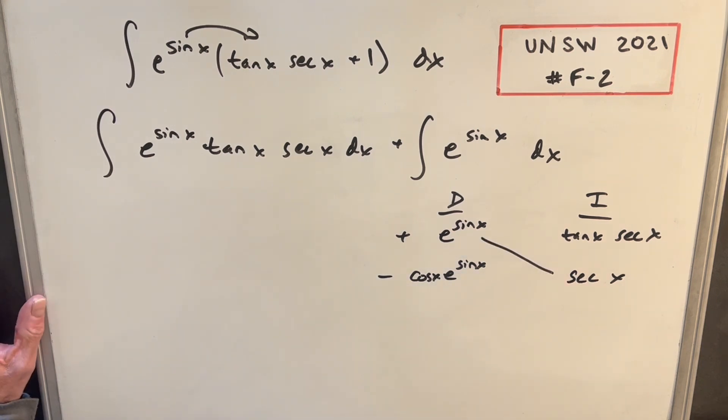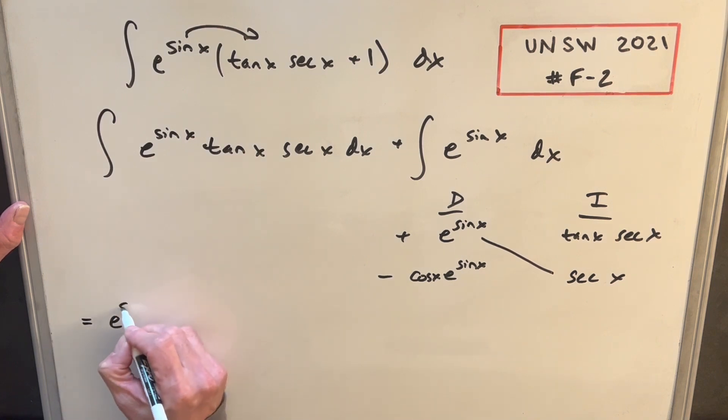Okay, so we have part of our answer right here. Let's just write down everything we have. So we have this diagonal as part of our answer. So we have e sine x times the secant x.